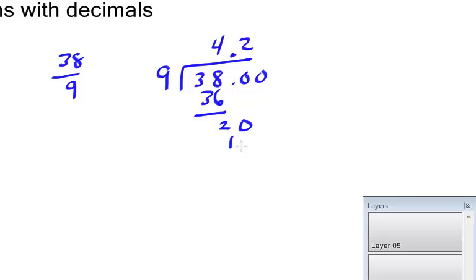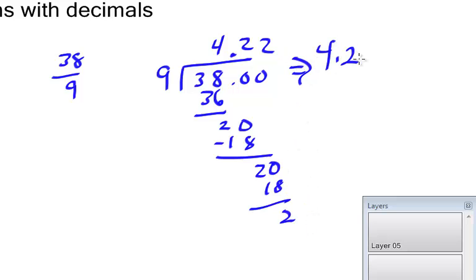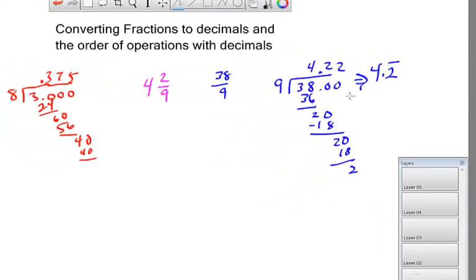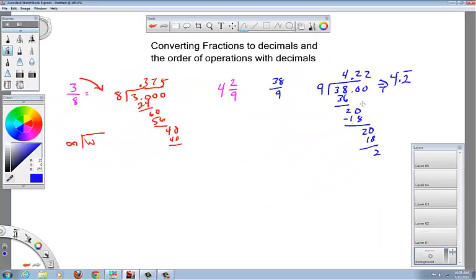Bring this down, and that's going to go 2 times, 18. Subtract that and we get another 2. So what's going to happen here is this is going to start repeating. This will be another 2, 18, you get a 2, bring another 0 down. So we write this one as 4.2 with a bar over the 2 because repeating decimal. When you divide like this, decimals either end like this - fancy word, this is called terminating - and this is of course called repeating.